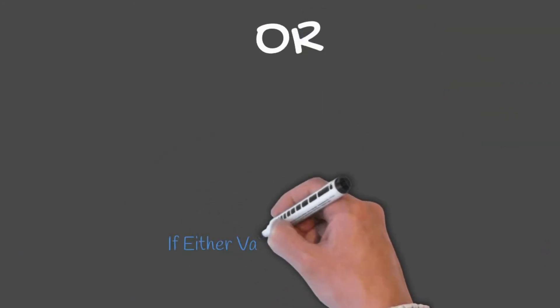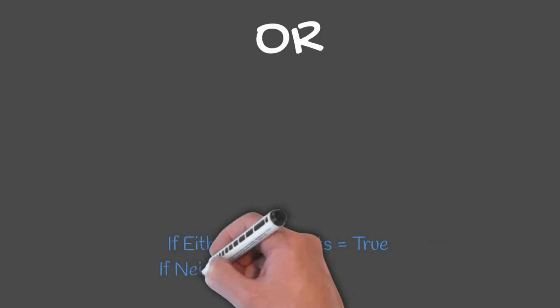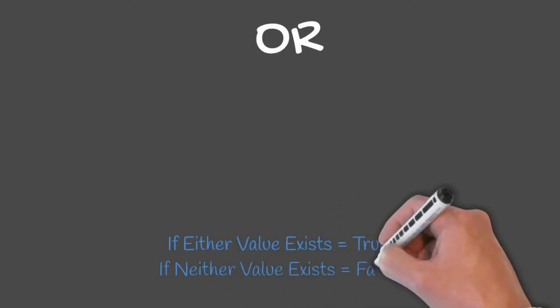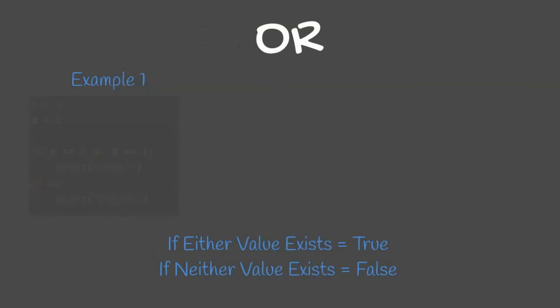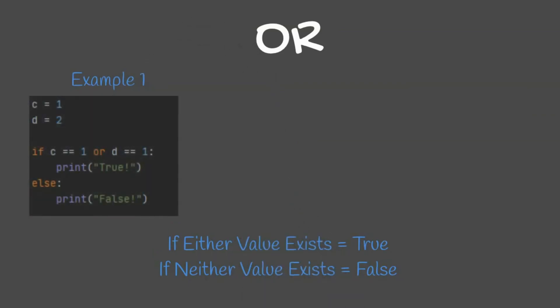OR checks whether either value in a statement exists for the statement to be true. If neither value exists, the statement is false. In our example, C equals 1 and D equals 2. So if C equals 1 OR D equals 1, this would print true, otherwise it would print false. In this example, C equals 1, so the statement would print true even though D equals 2.